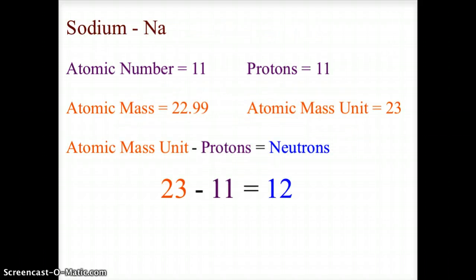So sodium, going back to that symbol we showed you a little earlier, sodium Na, atomic number 11, would have 11 protons. The atomic mass gives us an atomic mass unit of 23. Since protons plus neutrons equal the atomic mass unit, that means 23 minus 11 gives us 12 neutrons. So sodium would have 11 protons, 12 neutrons.